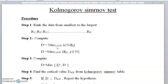In step 3, we have to compute the D value, which is the maximum of D+ and D− calculated in step 2. Based on these two values, whichever is the maximum will become the D value.